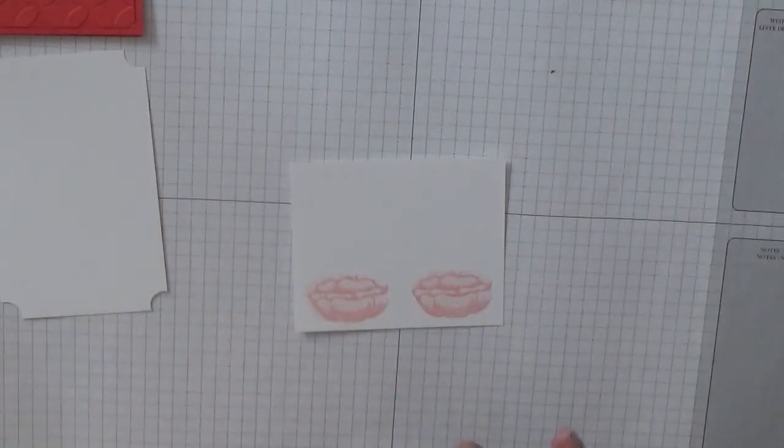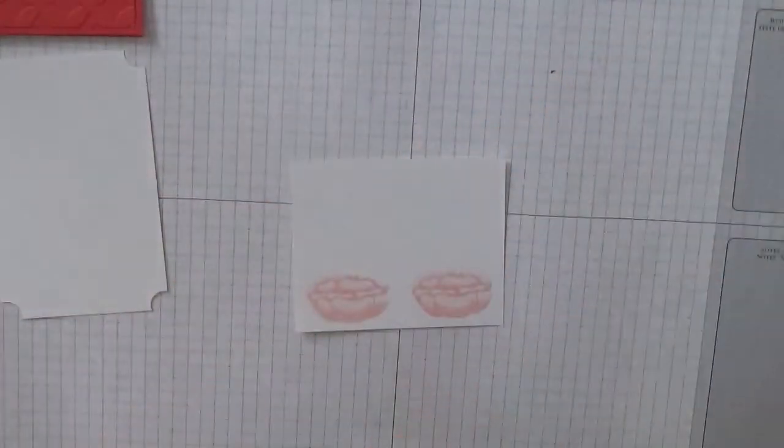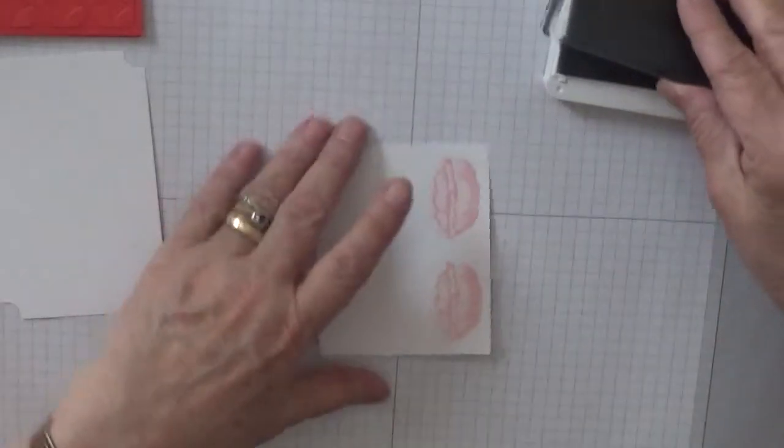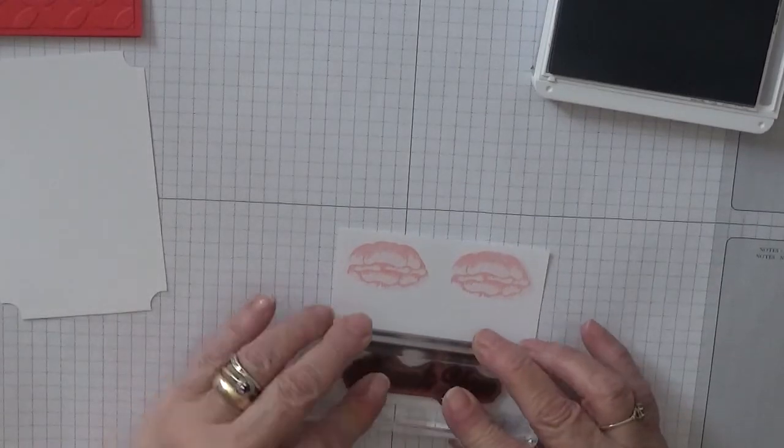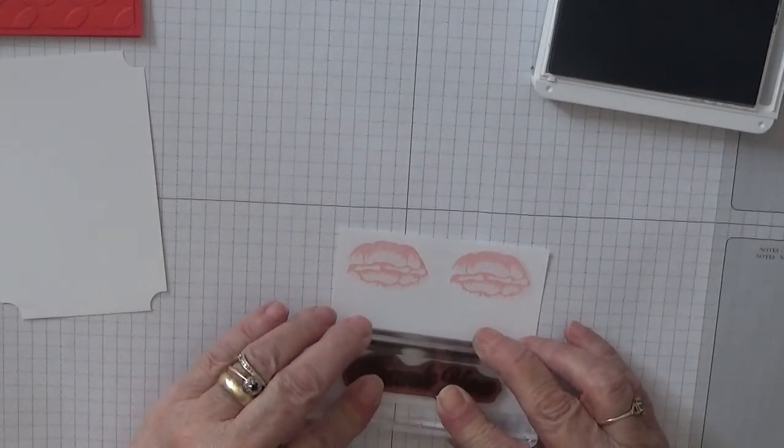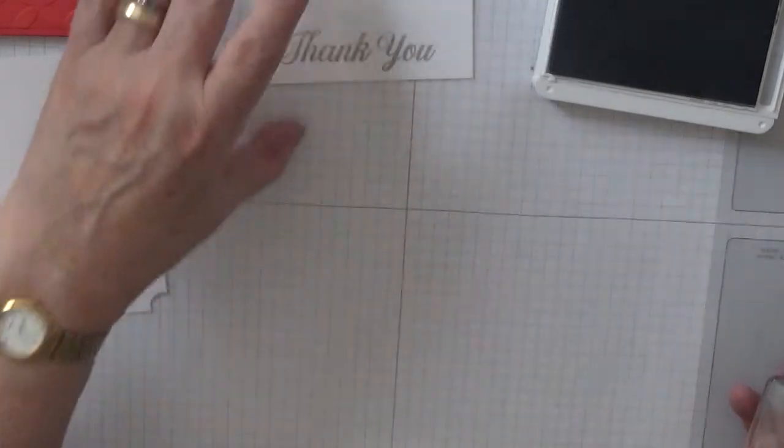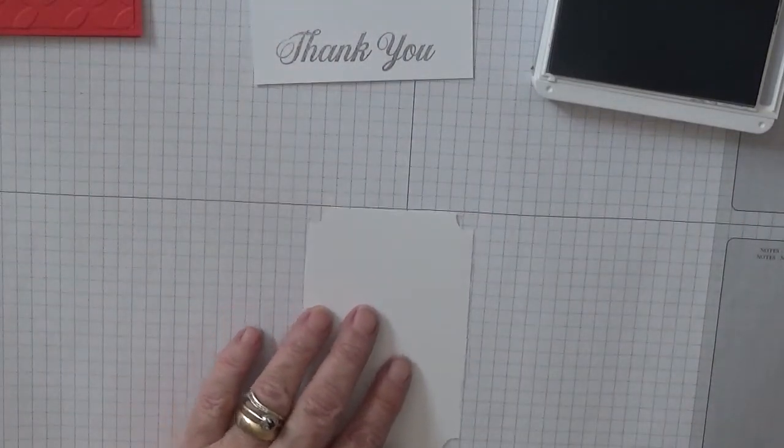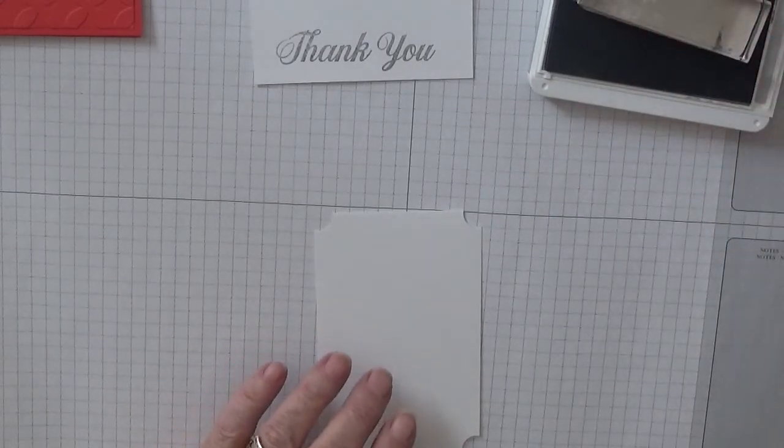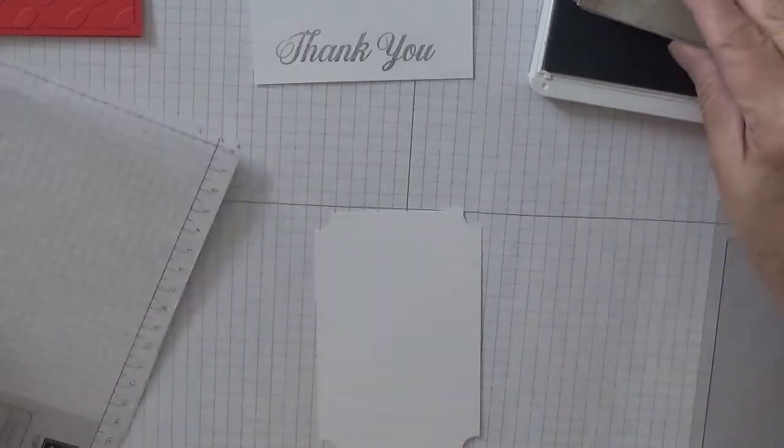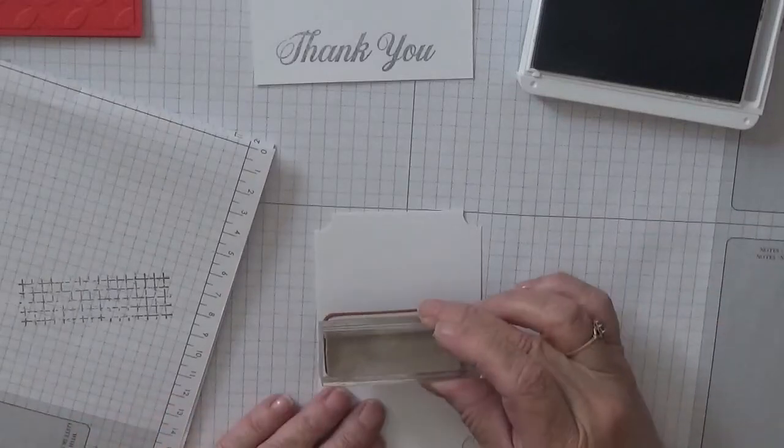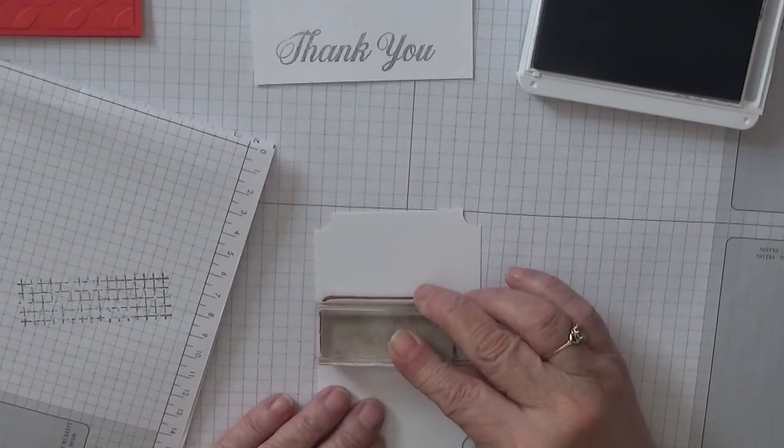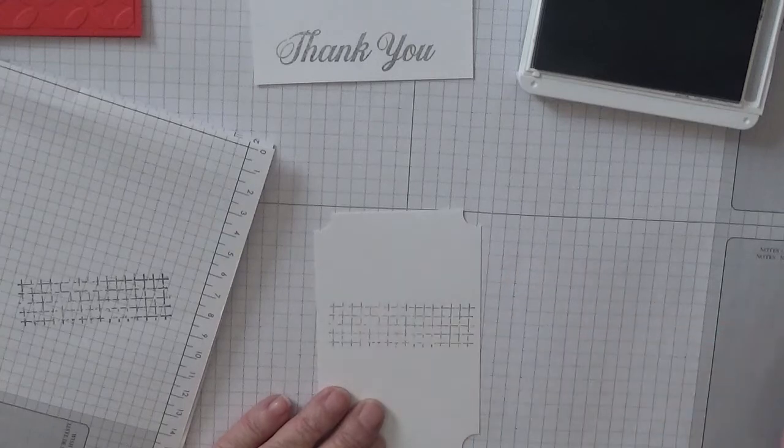Then with smokey slate, we want to stamp the word thank you, which we'll do under here. And we also want to do the grid. Now, I do need to stamp off for this because my smokey slate is very juicy. And I'm just going to stamp that right in the middle.